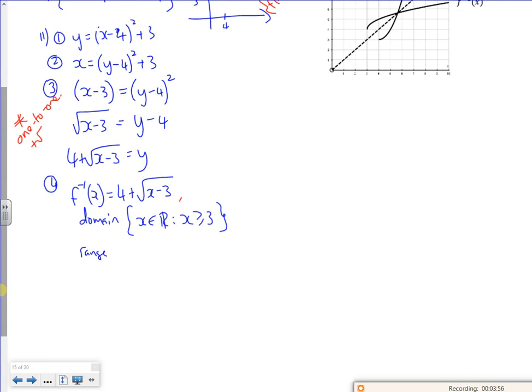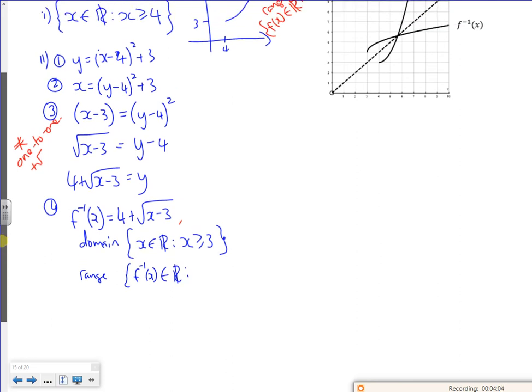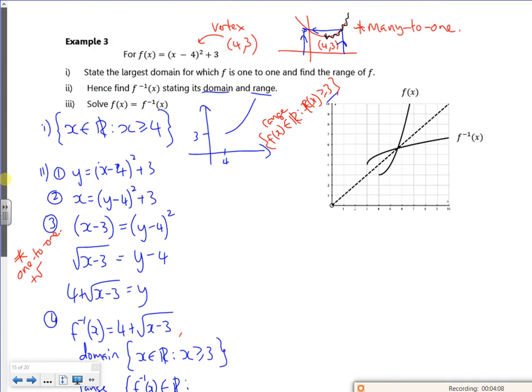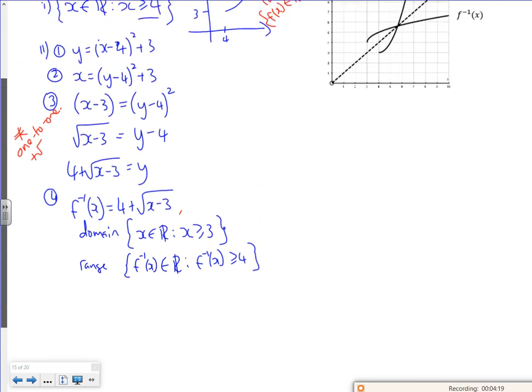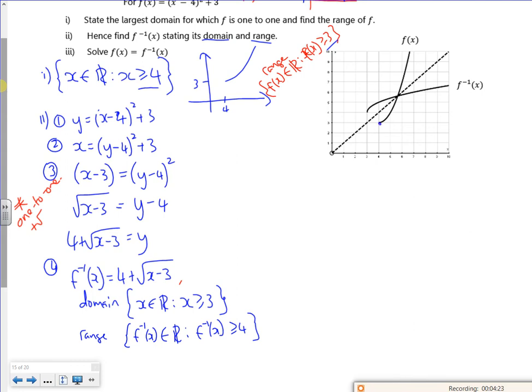And the range of the inverse, so f to the minus 1 of x belongs to the reals, because the domain is your x and the range is the y's. So the range of your inverse is the domain of your original function, which was bigger than 4. You can see that's the point 4 comma 3. That's the point 3 comma 4. So you can see that there are reflections of each other. So the x values on the original function started at 4 and the y values started at 3. But then on the inverse, the x values start at 3 and the y values start at 4. But you can also spot here that all three graphs cross.